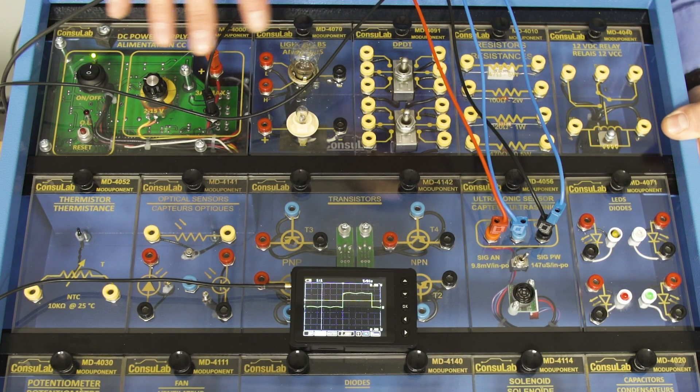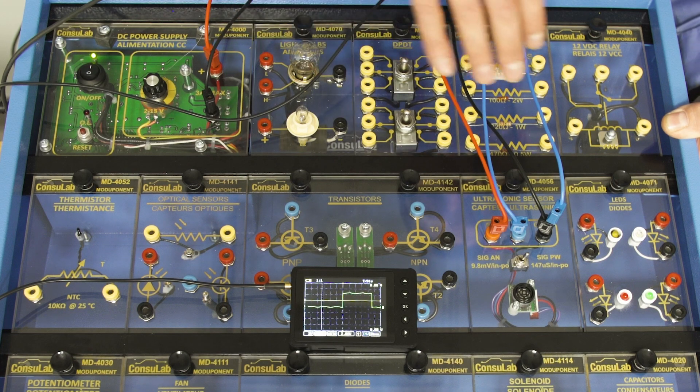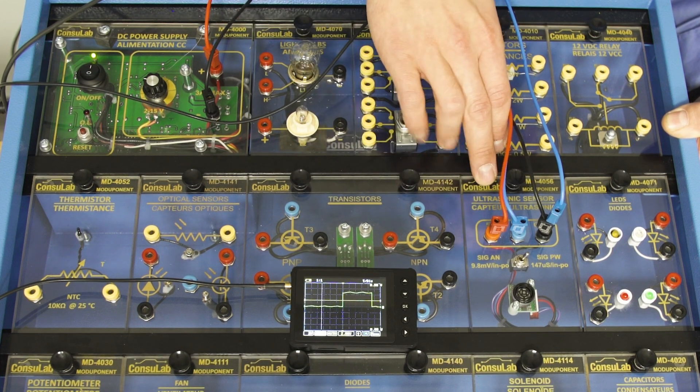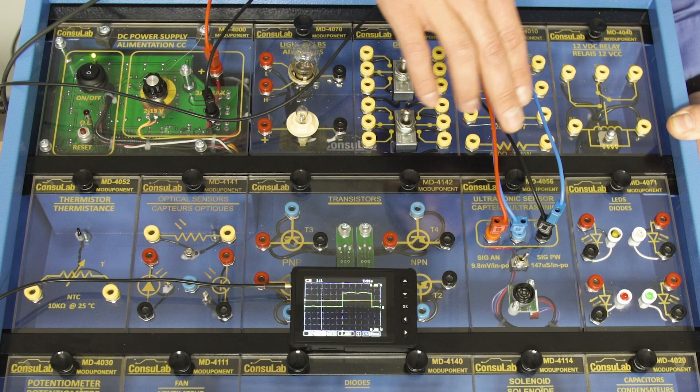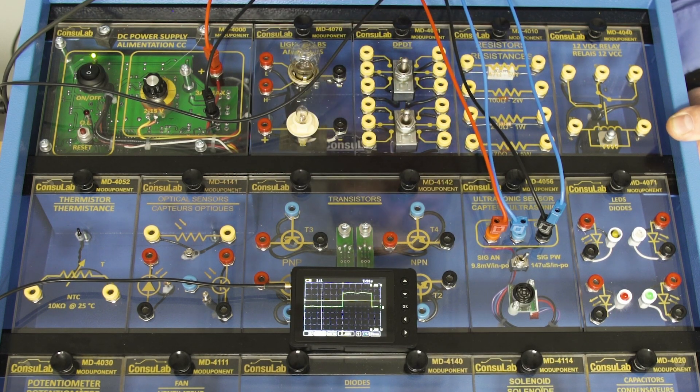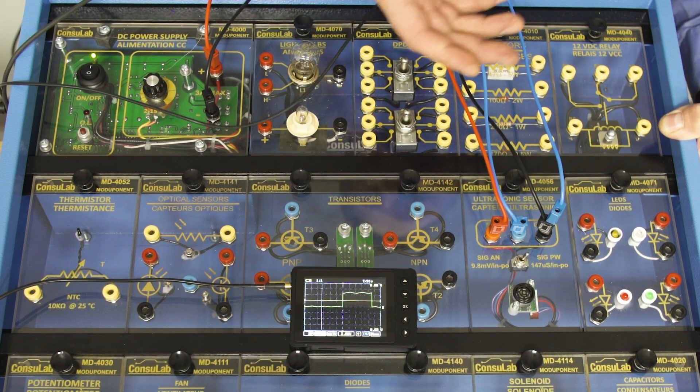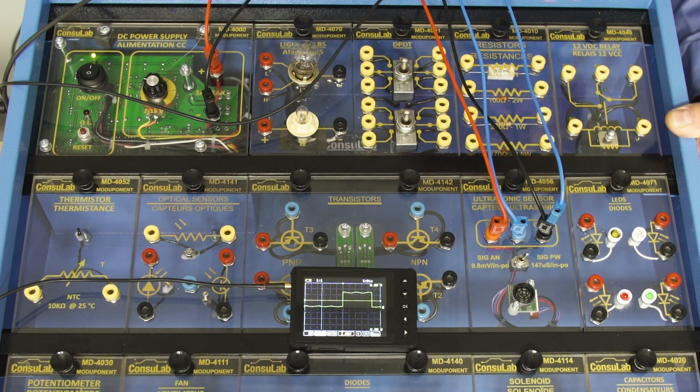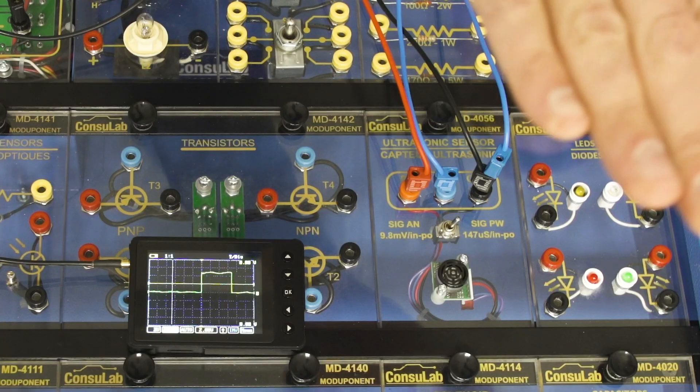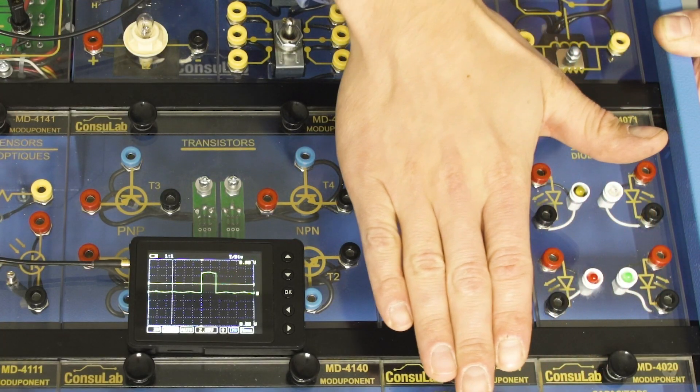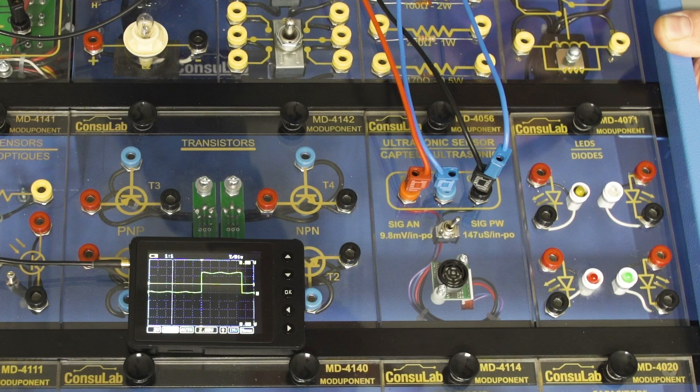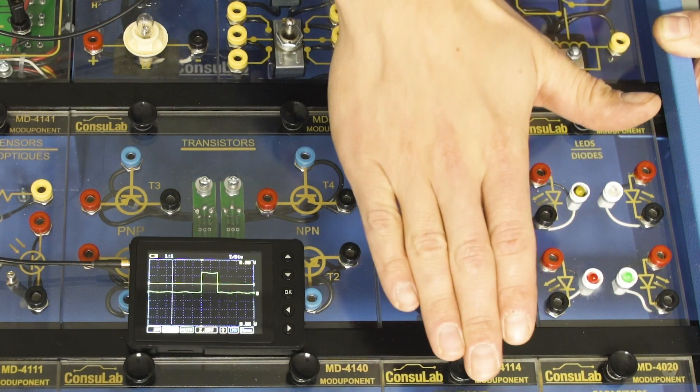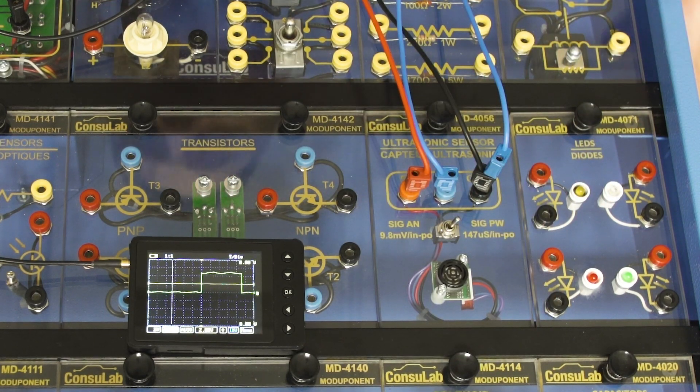I've connected power and ground to one of the module components, an ultrasonic sensor, and I've taken the signal wires and brought them to an oscilloscope. This ultrasonic sensor could be used in a vehicle with advanced driver assist systems, an ADAS system. If I take my hand and put it over the sensor, as I get closer, we can see a change in the sensor signal. This is just one example of things you can do with these trainers.